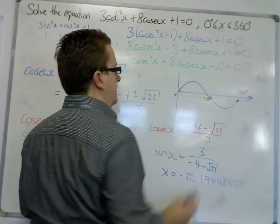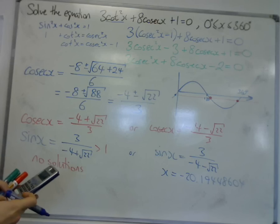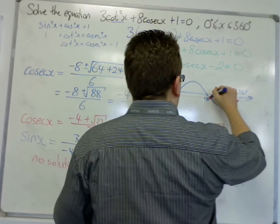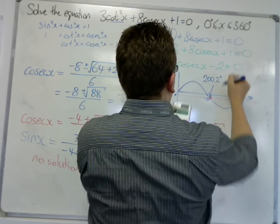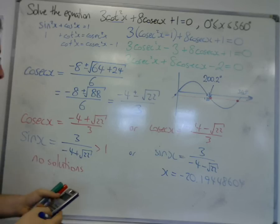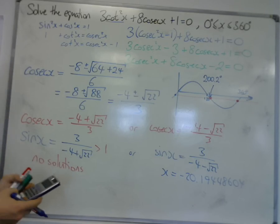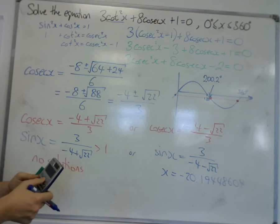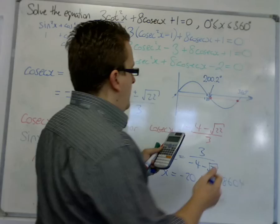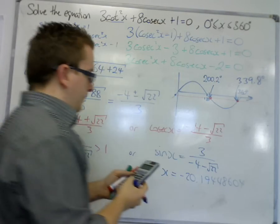If I do 180 take away that answer, this will get me this solution, which is 200.2 degrees to one decimal place. And now if I do 360 + inverse sine of the 3/(-4 - √22), then that's 339.8 degrees.